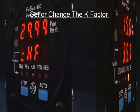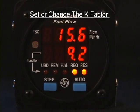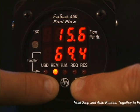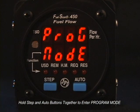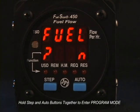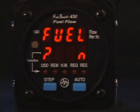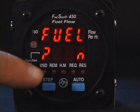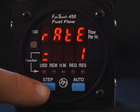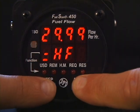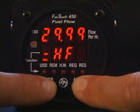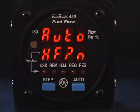This is how you set or change the K-Factor. Hold both the Step and Auto buttons simultaneously for a few seconds until you see the words Program Mode and then Fuel No. Tap Step twice to see the current K-Factor. With the current K-Factor shown, hold both Step and Auto until you see Auto K-Factor No.